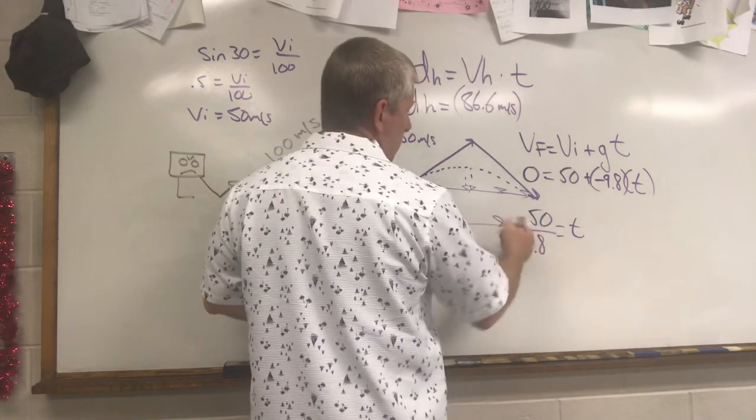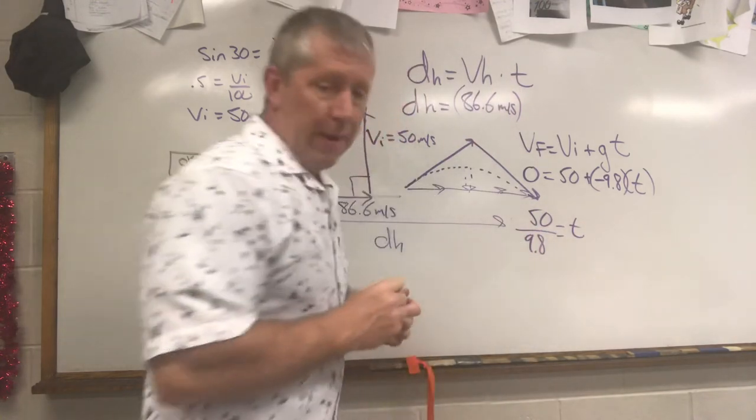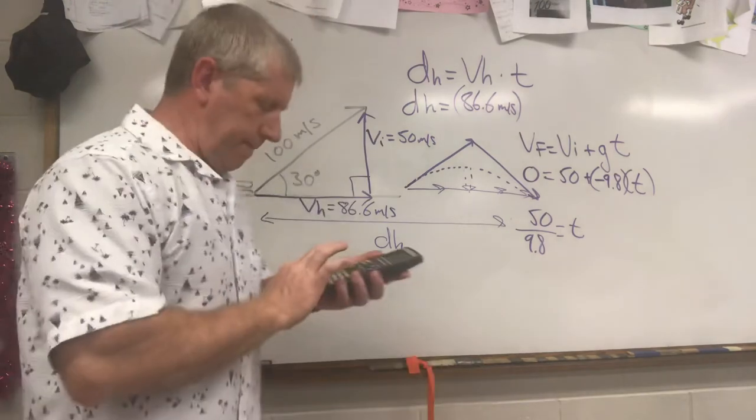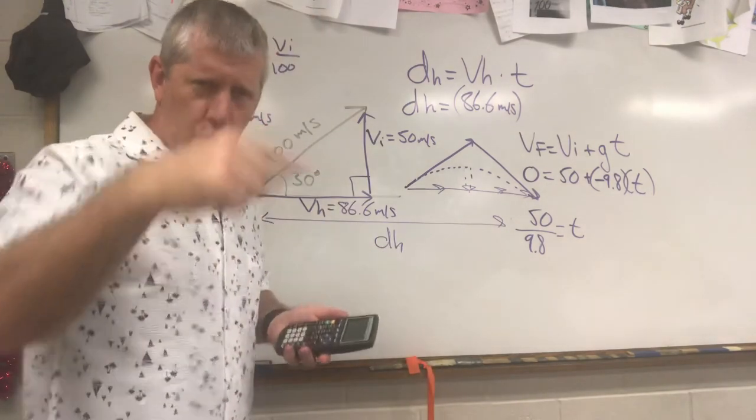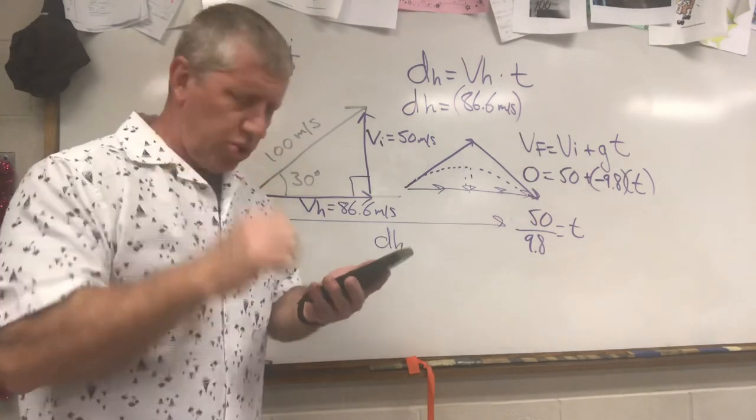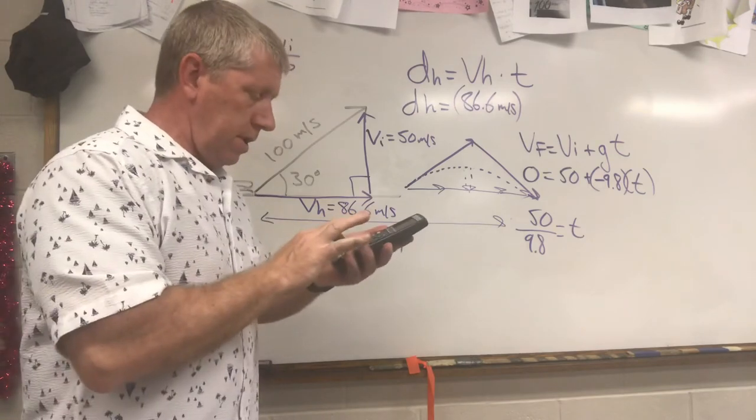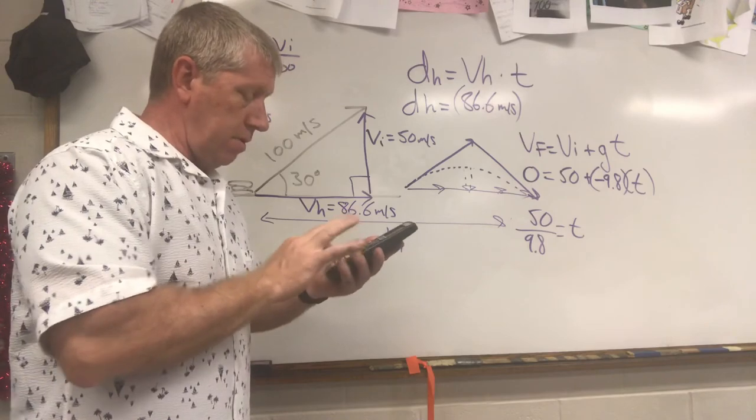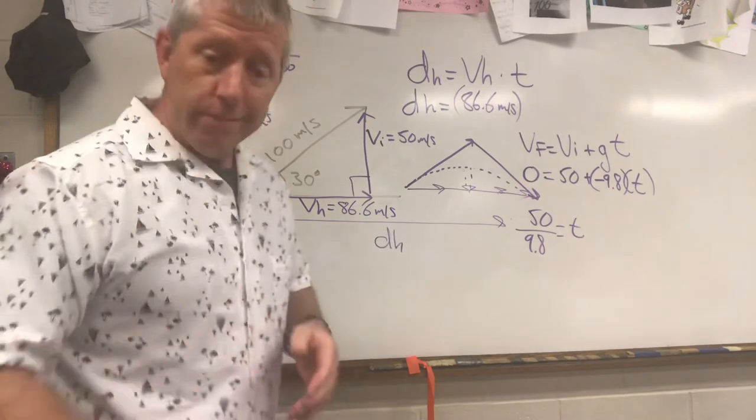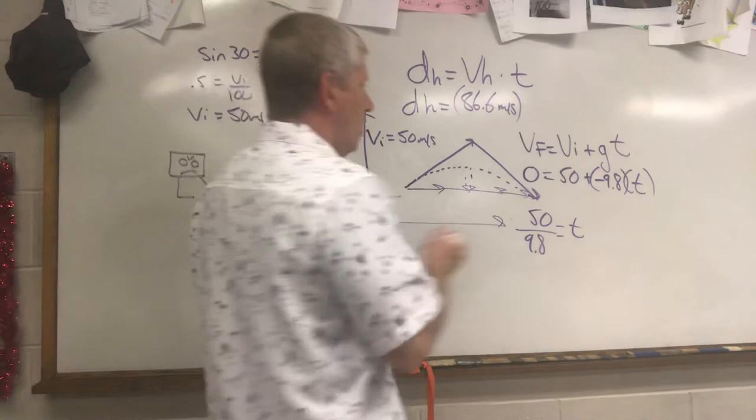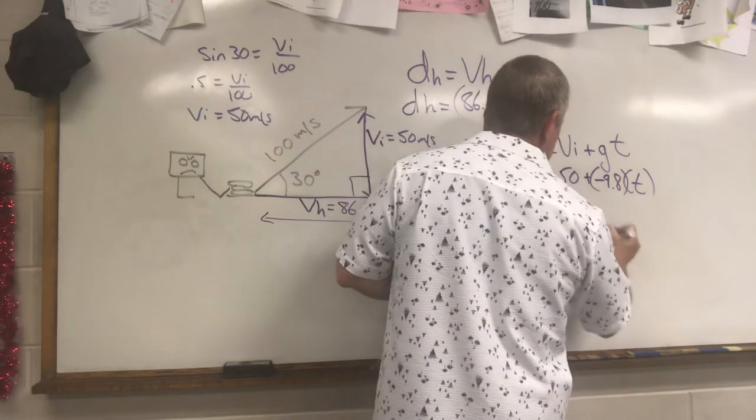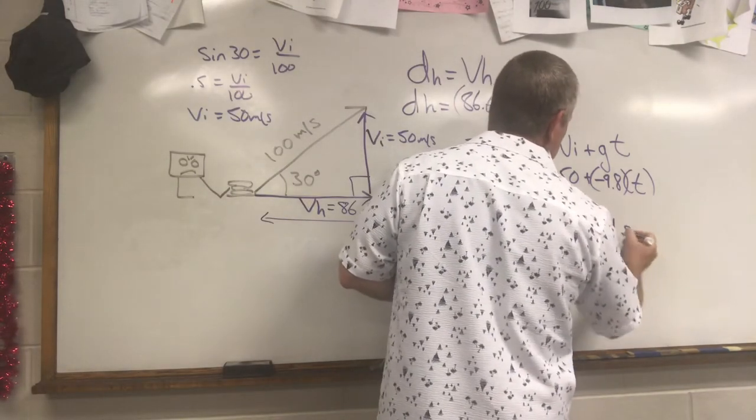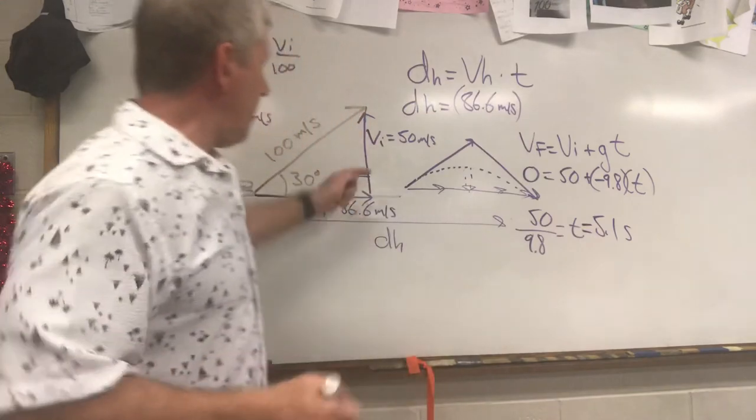It's about 5. We'll get a little bit better than that, because we're better than that. You and I are better than that. We can do this. We're not amateurs, people. 50 divided by 9.8. 5.1. So 5.1 seconds is the time that it takes that Krabby Patty to go up and stop.